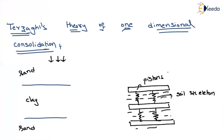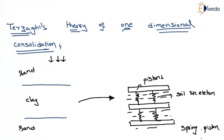The perforations in the pistons are analogous to the voids that impart permeability to the soils. Terzaghi modeled or observed the phenomenon of how consolidation happens in clay in terms of the spring-piston model.